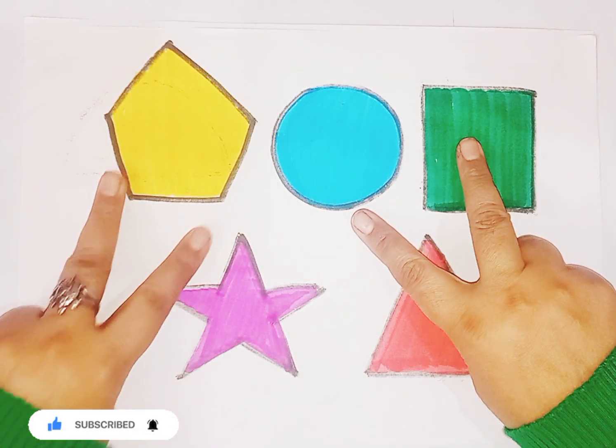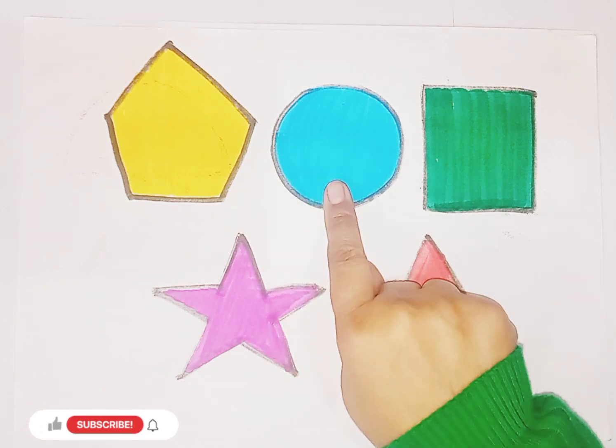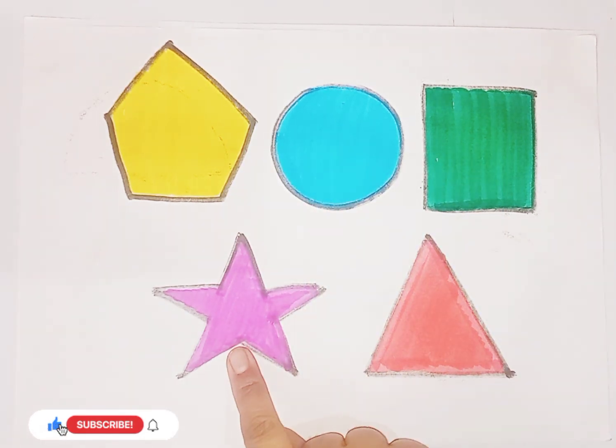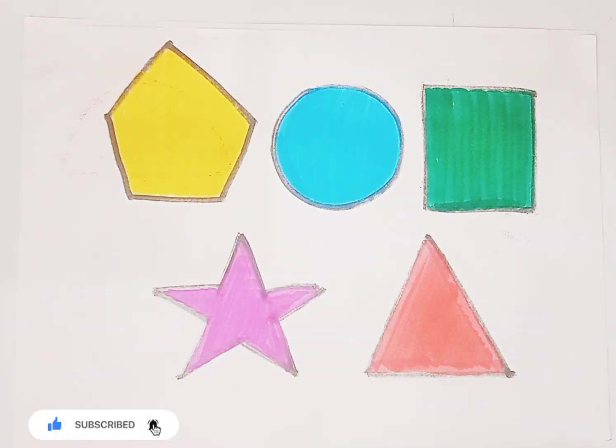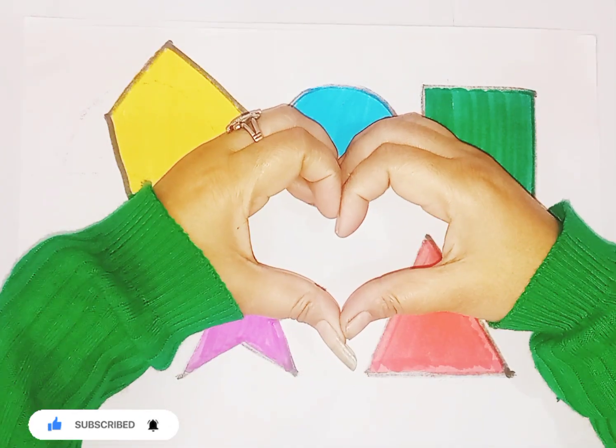So kids, today we learn some 2D shapes like pentagon, circle, square, star, triangle. So kids, I hope you like the video. If you like the video, please like and subscribe my channel. Bye bye.